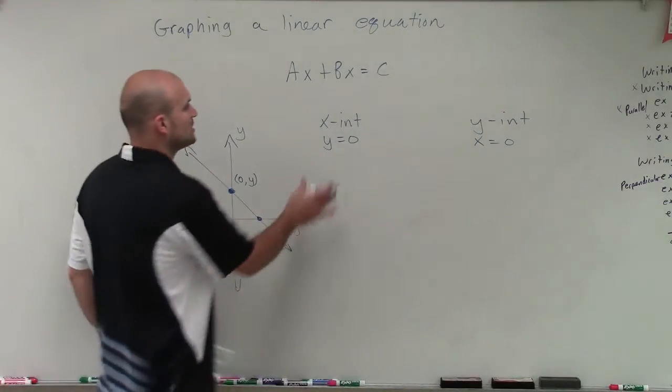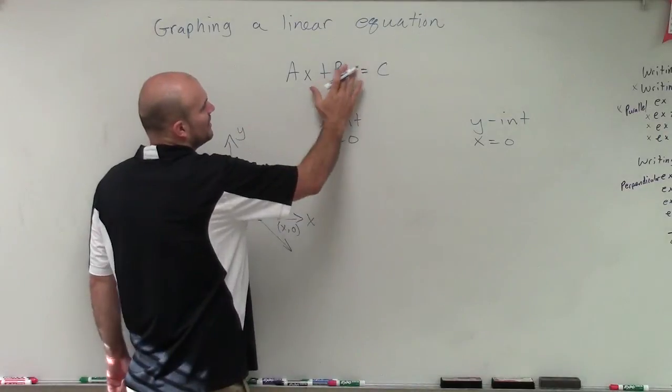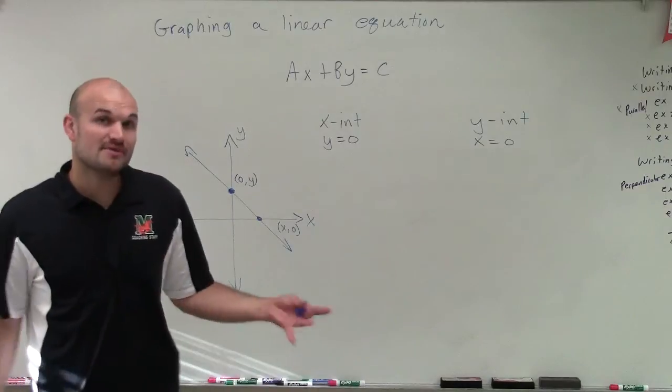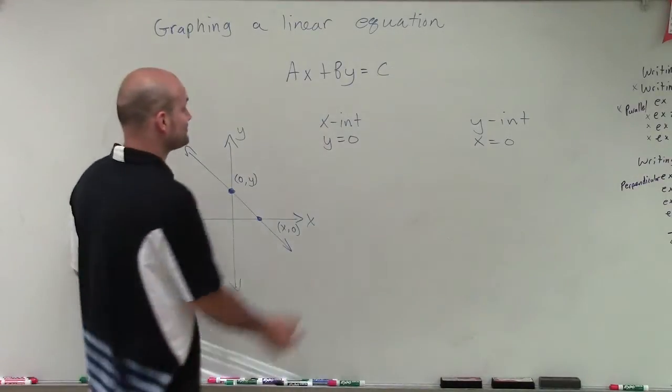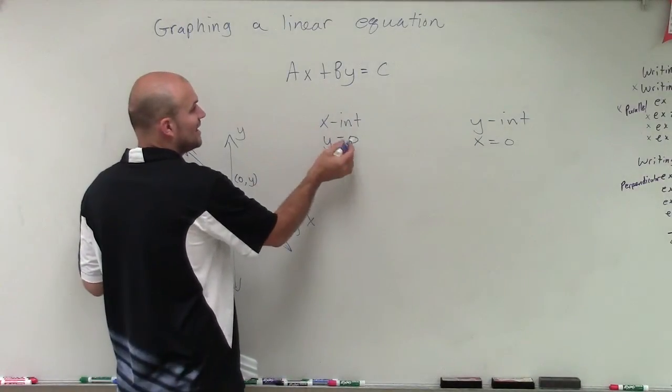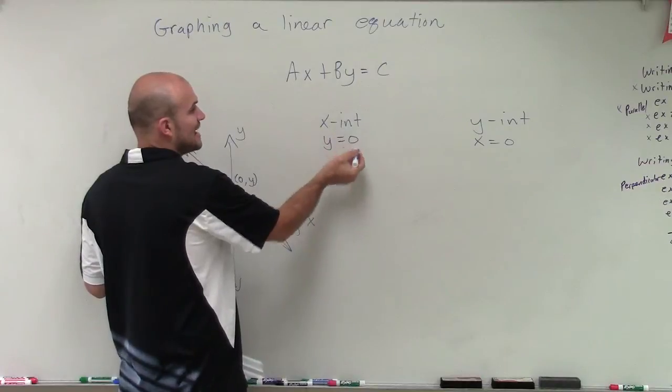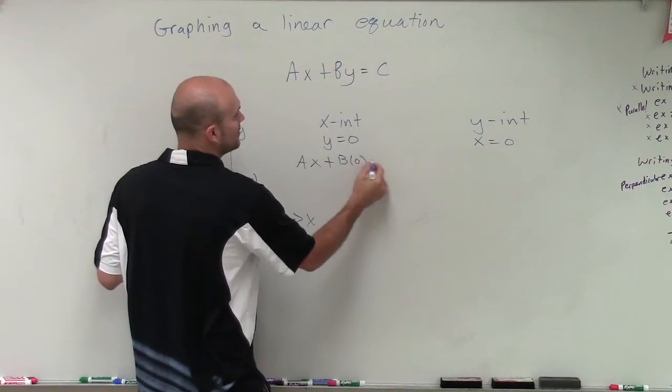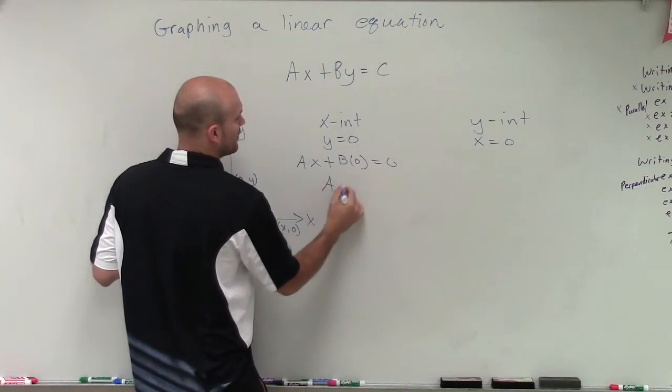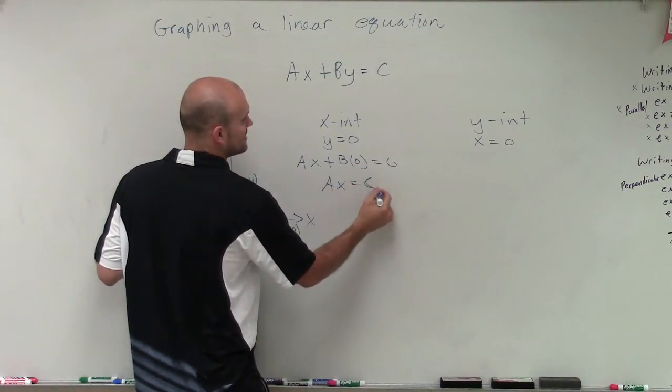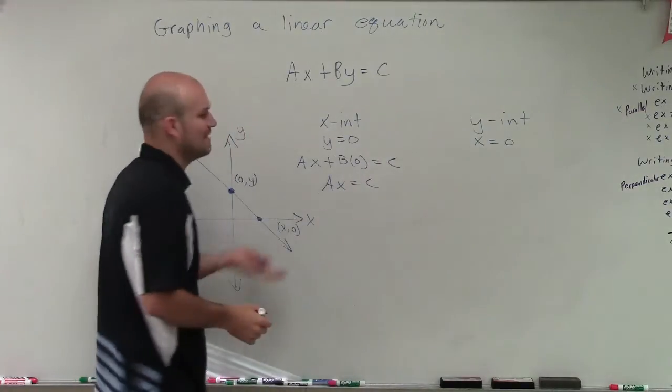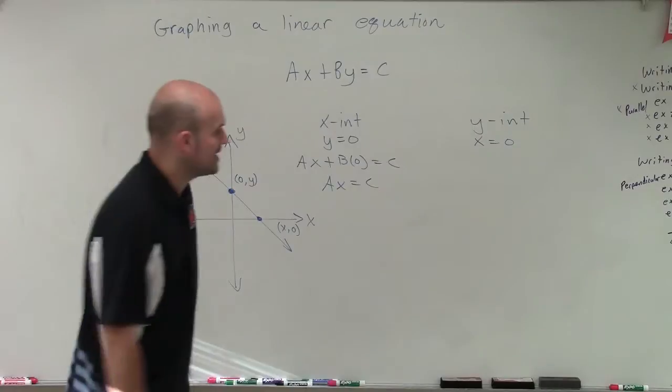And that's very important because what we're going to do is, for Ax plus By equals C, if I know y equals 0 for the x-intercept, I'm going to plug 0 into this equation. So I'd have Ax plus B times 0 equals C. So therefore, Ax equals C. And then depending on what values I have for A and C, I'll be able to solve for x.